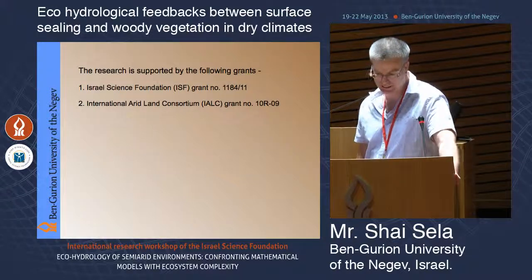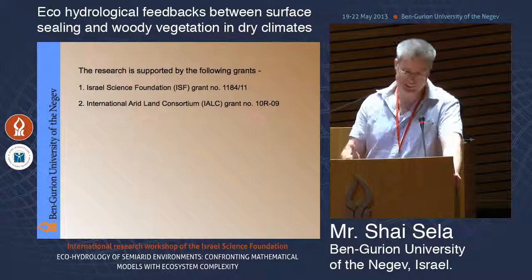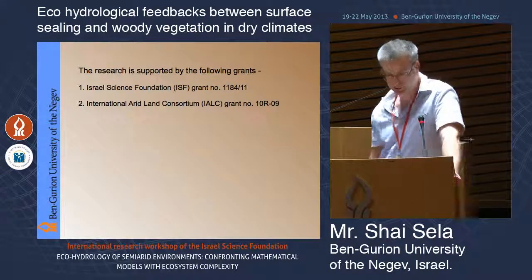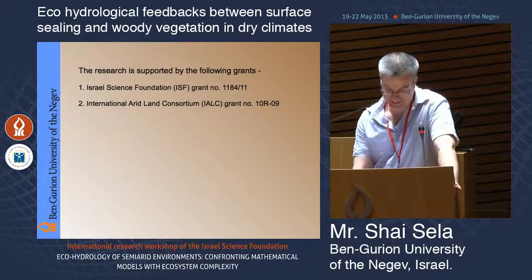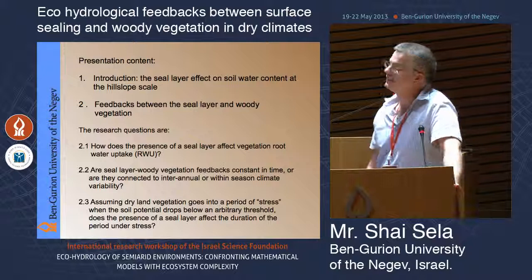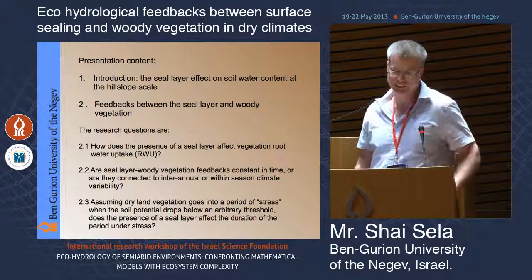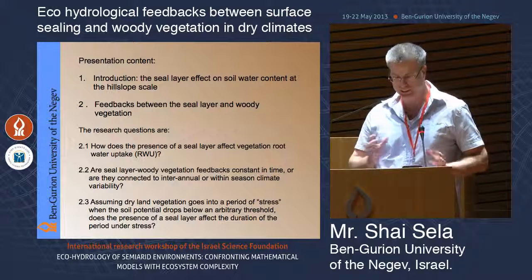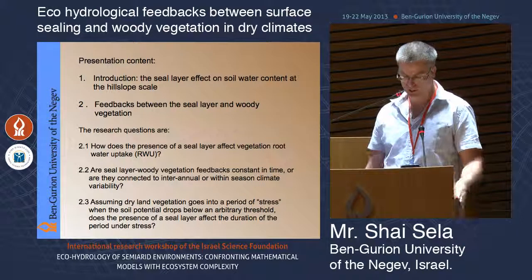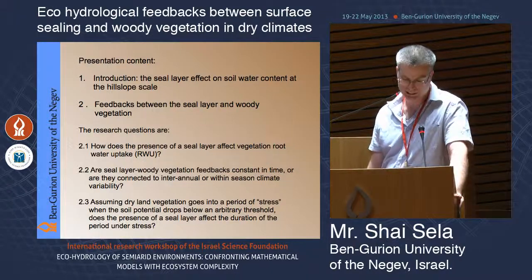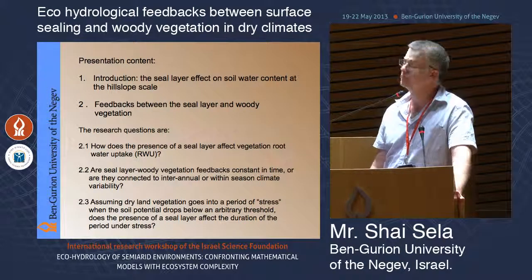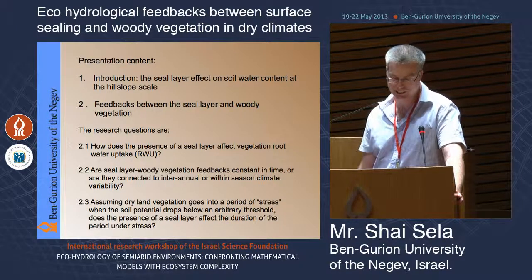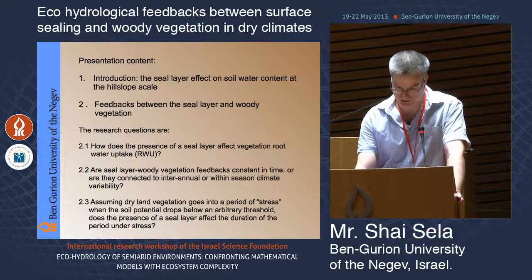This talk will be divided into two parts. The first part will be an introduction about the seal layer effect on soil water content on the hill slope scale. The second part will discuss the feedbacks between this seal layer and woody vegetation. The specific questions we will address are: how does the presence of a seal layer affect vegetation root water uptake? Are seal layer woody vegetation feedbacks constant in time or connected to interannual or within-season rainfall variability? And does the presence of a seal layer affect the duration of the period vegetation is under stress?